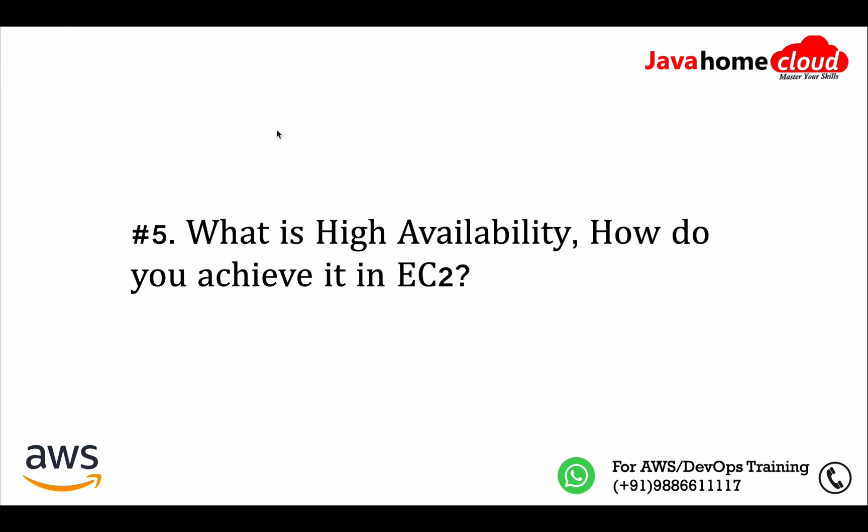Next question: what is High Availability and how do you achieve it in EC2? High Availability means making your application reachable even in case of failures. In AWS we implement high availability by setting up EC2 instances across multiple Availability Zones. Amazon has data centers in regions, and under each region there are multiple AZs. To achieve high availability for EC2, we put instances across availability zones — if any AZ fails, traffic is processed by EC2 instances in the second or third availability zone.